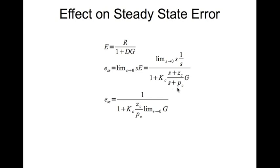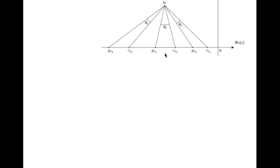Without the lead controller, the steady-state error is 1 / (1 + kc · lim_{s→0} G). As soon as you add the lead controller, you get the additional factor zc/pc. By design, |zc| < |pc|, so zc/pc < 1, meaning the denominator is smaller than before. This tells you the lead controller increases steady-state error. So one goal of the design is to minimize this increase — you want zc/pc to be as large as possible.